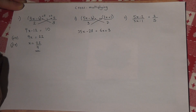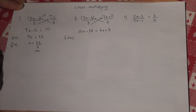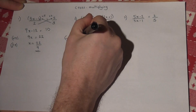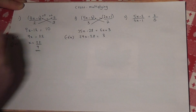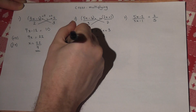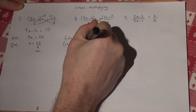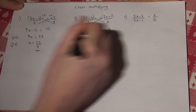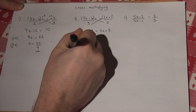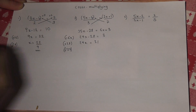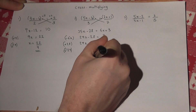The x is on the left-hand side in this case, so I'll take away 6x, leaving me with 29x. Take 28 equals 3. And then add across the 28, so 29x equals 31. Then divide by 29, so x will equal 31 over 29.